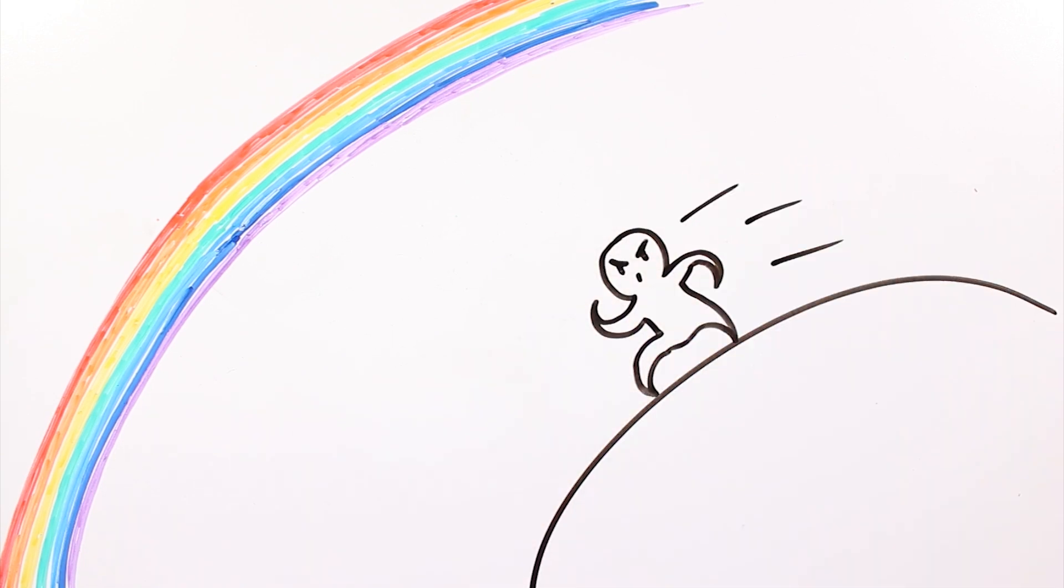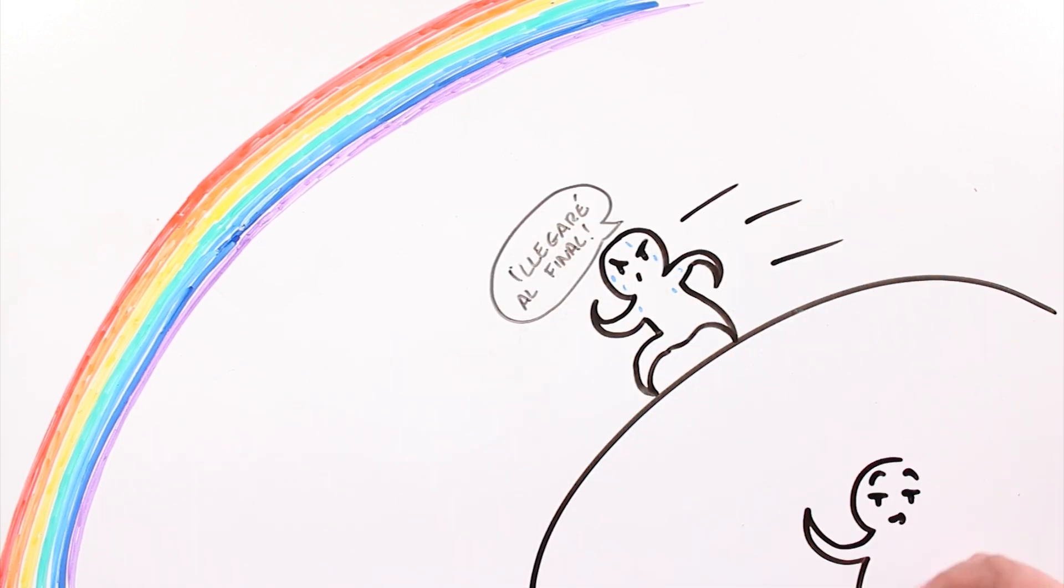Next time you happen to see a rainbow, try walking towards it. You'll see it moving away from you as you move forward.